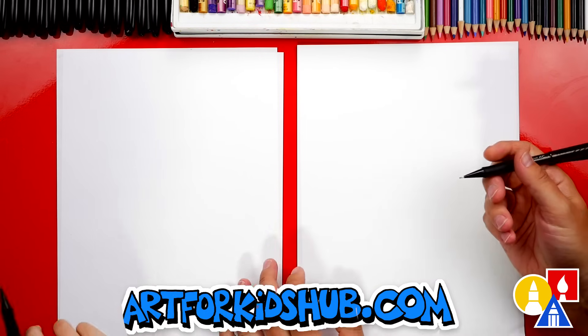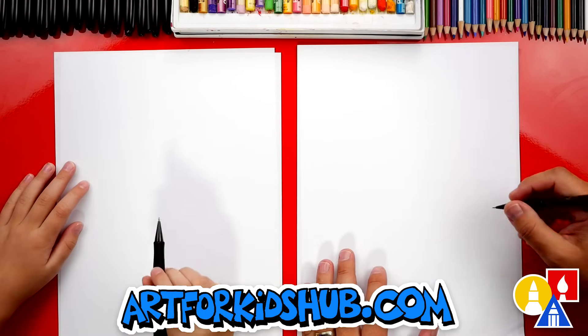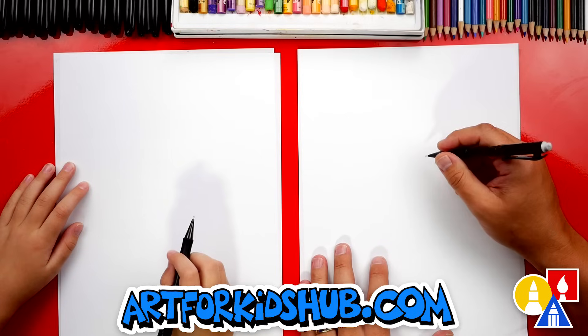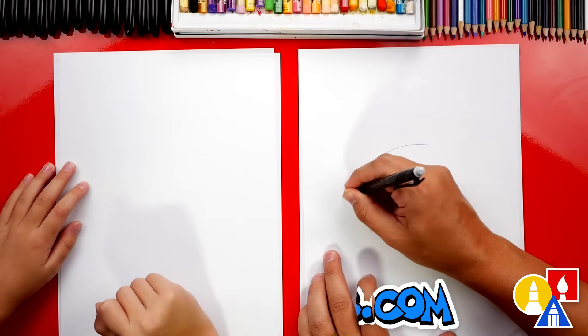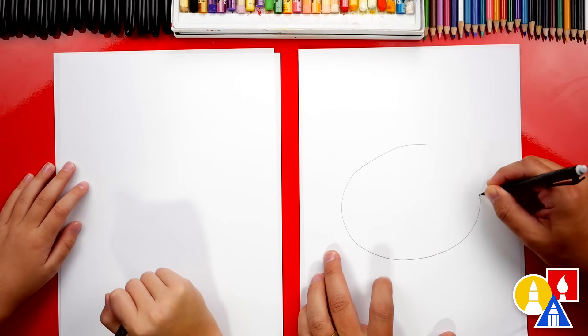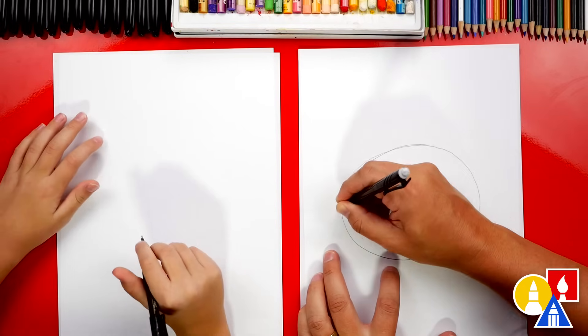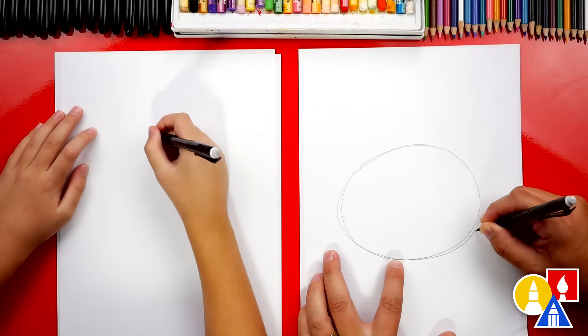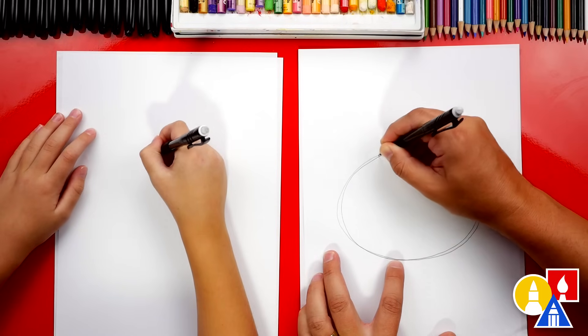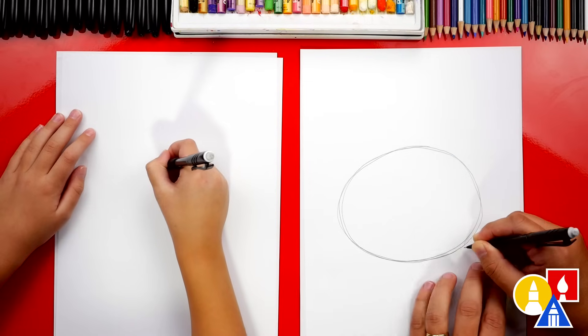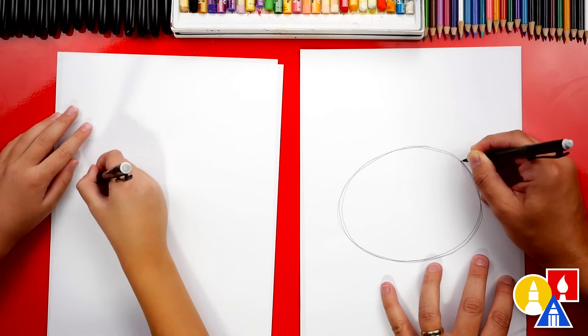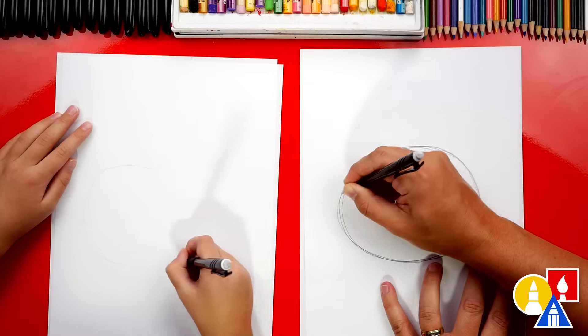We're first using our pencil to draw the general shape of our piggy bank, which is a giant oval. We're going to start here and we're going to draw a big oval shape. I'm going to go back over it to make it a little darker, but you could just draw it once. And you can also draw it lighter so that it's easier to erase. I'm pressing hard so that our friends can see it on the camera. There we go.